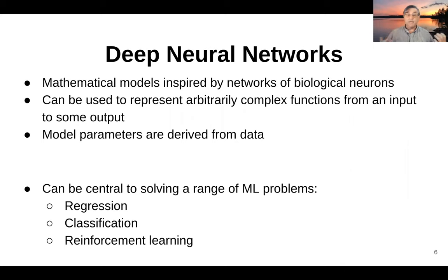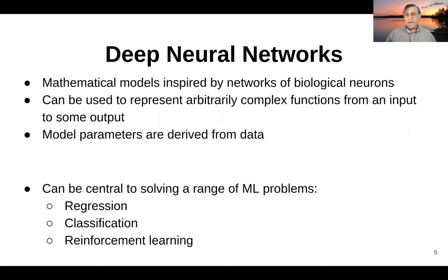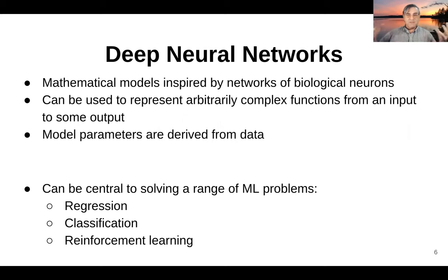These models have lots of parameters. What's cool in general about machine learning — and it's true for neural networks and deep neural networks — is that we can derive these model parameters from some sort of a dataset. Deep learning is a fairly general idea and can be used to solve a whole variety of different kinds of machine learning problems. Regression is something that many of you have been exposed to: the idea of taking some sort of an input and mapping that to some continuous output, such as measuring a distance or brightness of something.